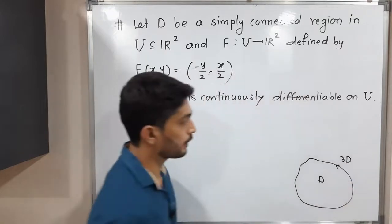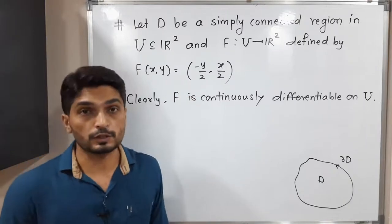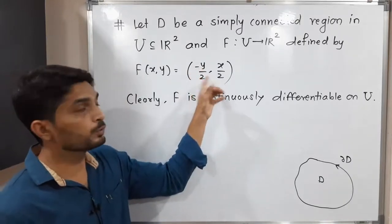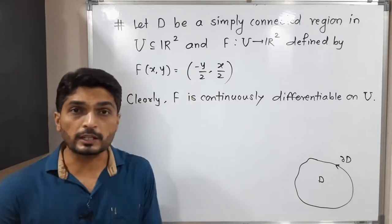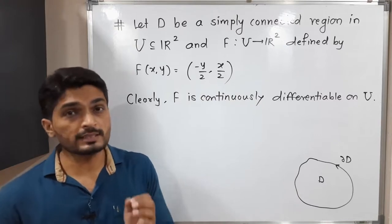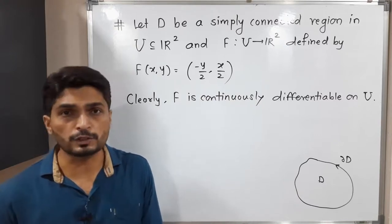We have defined this function F(x,y) = (-y/2, x/2). This is a vector field. Clearly it is continuously differentiable. Green's theorem says whatever vector field we have, it should be continuously differentiable, and this F satisfies that condition, so we can apply Green's theorem.